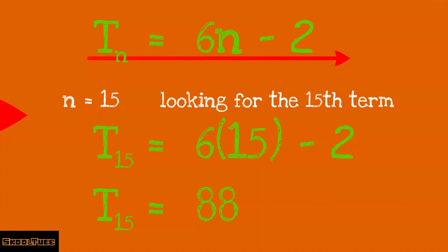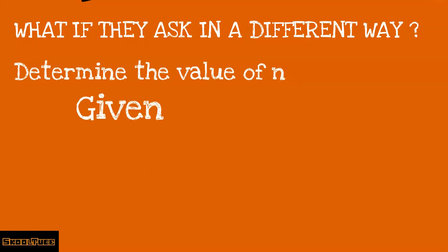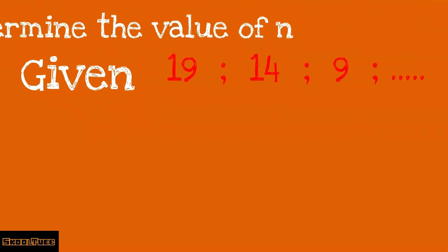Simple, right? Now let's move on to something a little more difficult. What if you are asked in a different way to determine the value of n? And you are given that the sequence is 19, 14, and 9. Which term is equal to minus 11? We know that Tn equals minus 11.